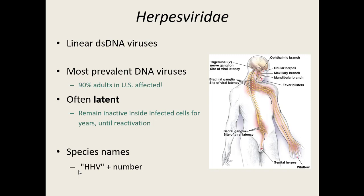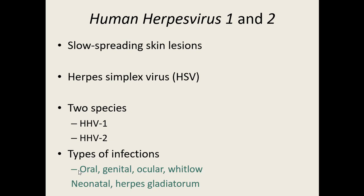All of the herpes viruses we're going to talk about — there are eight of them altogether — are all called human herpes virus (HHV) and then given a number, numbered based on the order in which they were discovered. The first human herpes viruses are HHV-1 and HHV-2, and we talk about them together because they both cause the same type of condition: slow-spreading skin lesions. They were previously known as the herpes simplex virus, but are now just called human herpes 1 and 2.